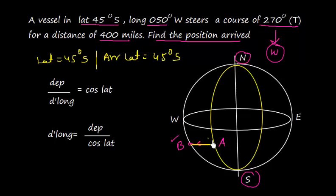Now let's talk about longitude. The distance from A to B is the east-west distance, so this is nothing but departure, which can be found from the formula: departure by d'long equals cosine latitude. Or simply, d'long is departure by cosine latitude.